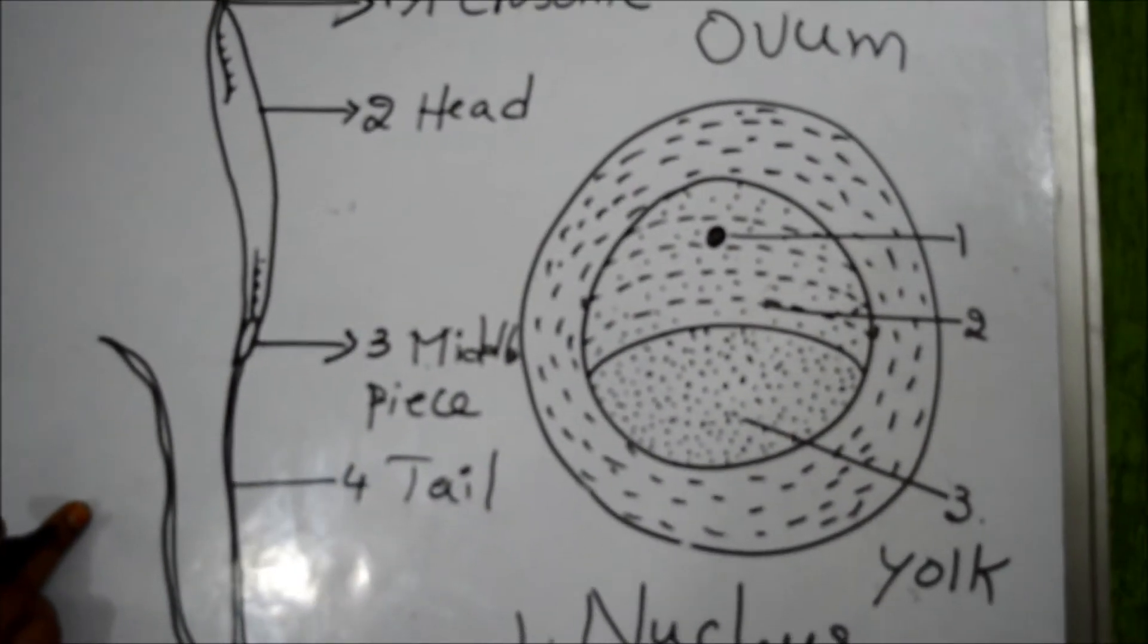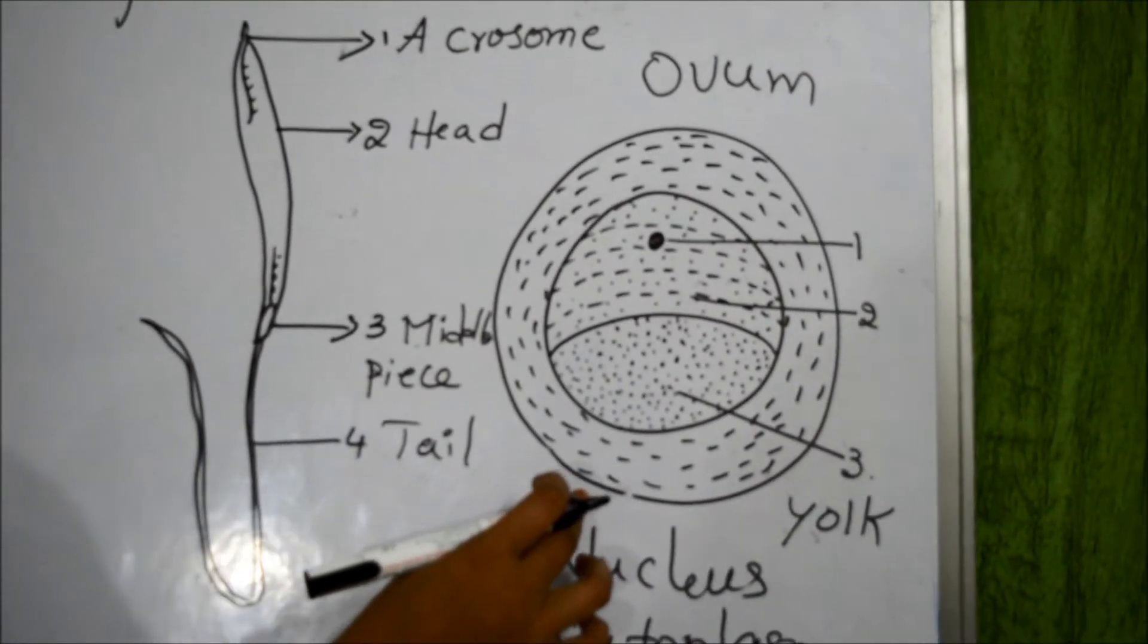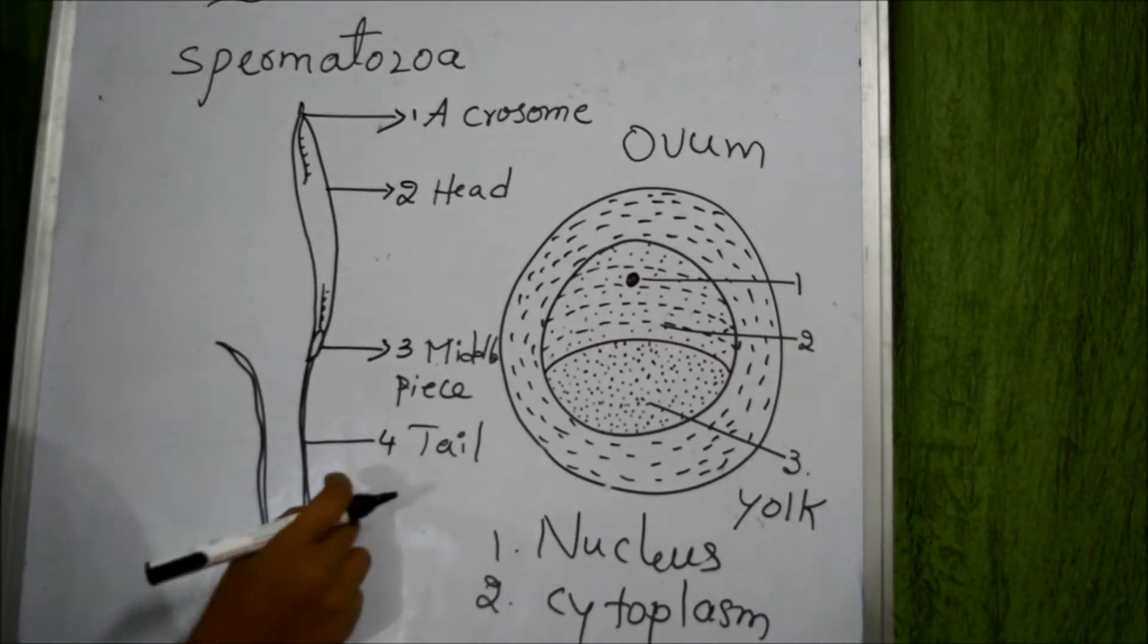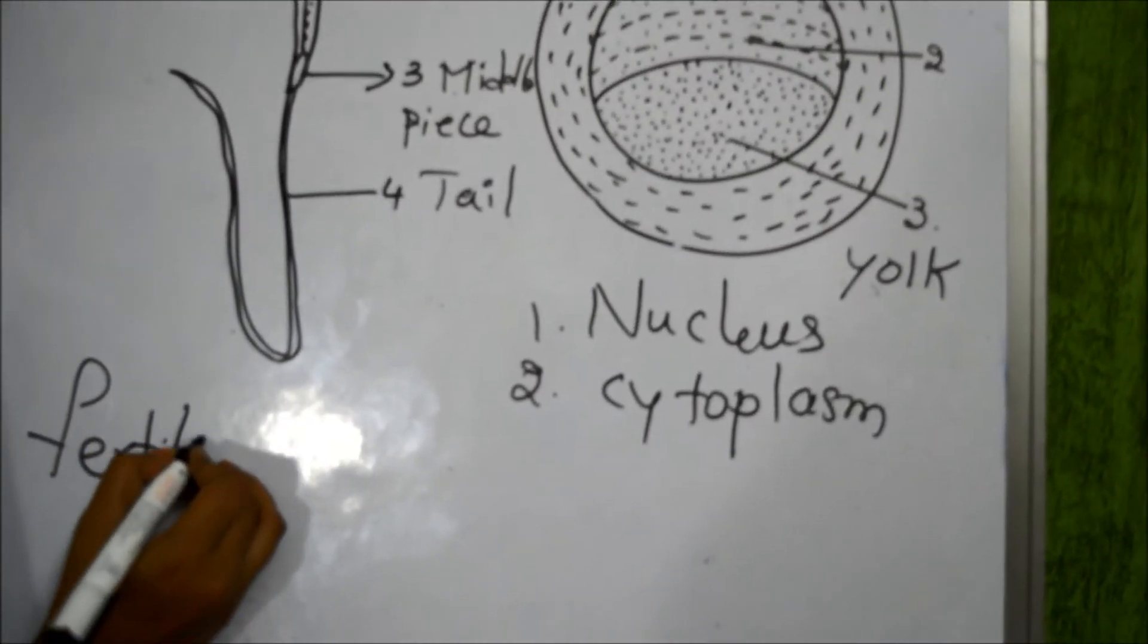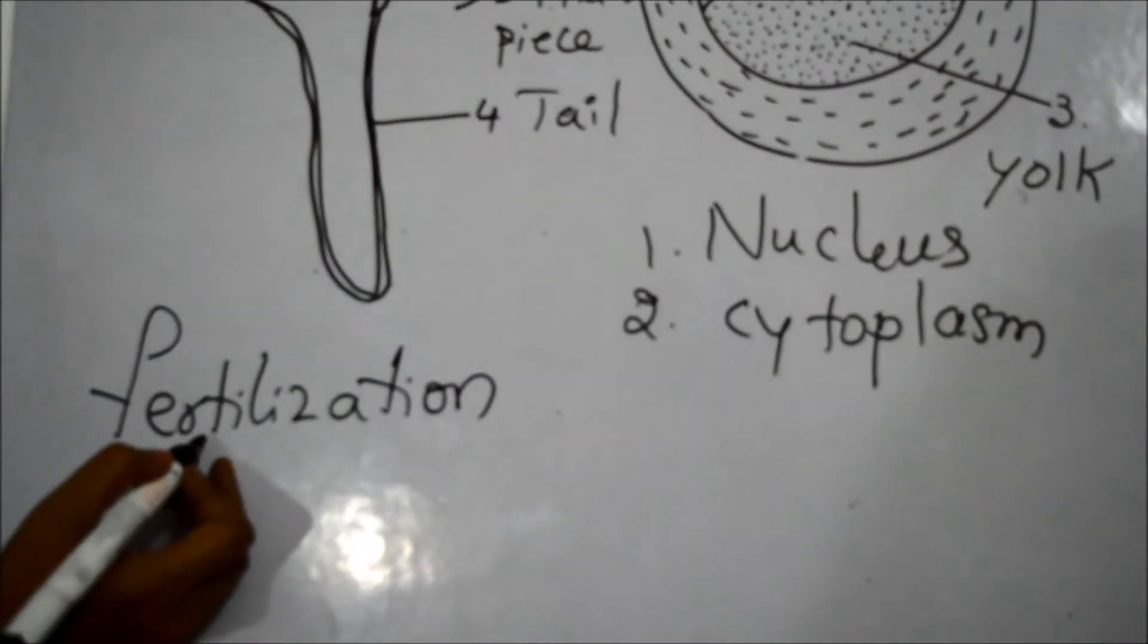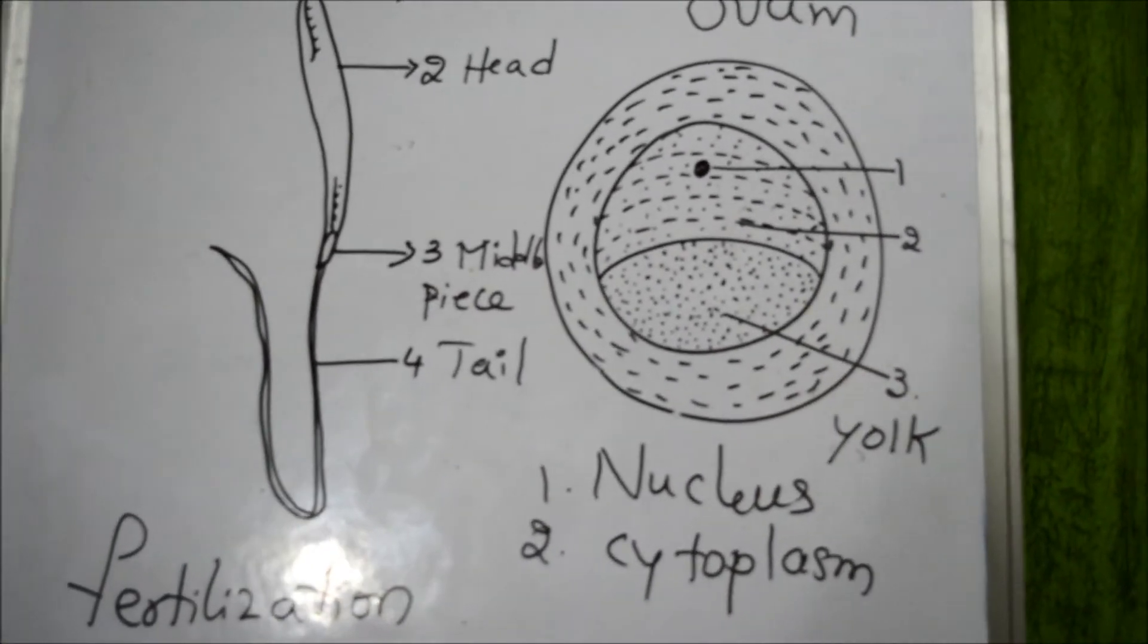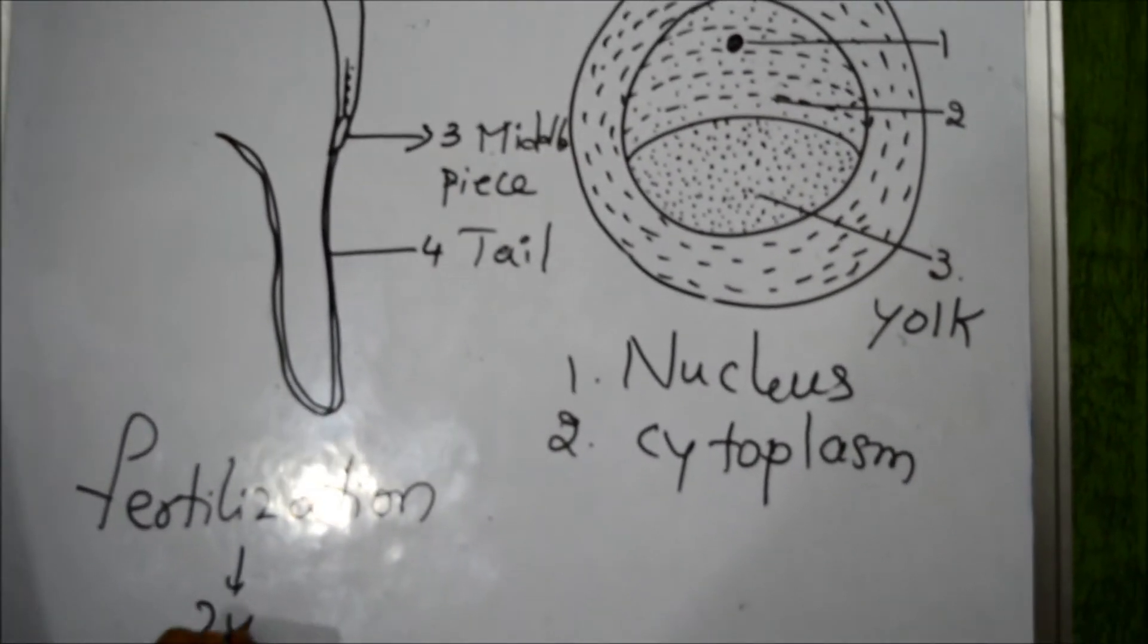The spermatozoa are produced in large numbers. When it comes to the ovum they are produced in very less numbers. When the spermatozoa moves to fuse with ovum, this fusion of male and female gametes is called fertilization. Only a single spermatozoa fertilizes the ovum and the fertilized ovum is called zygote.